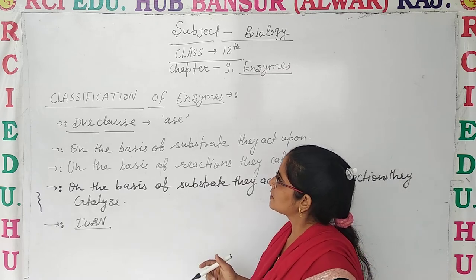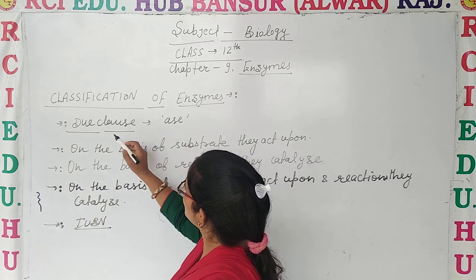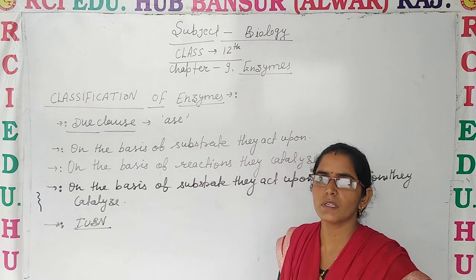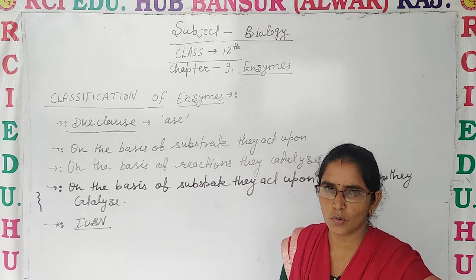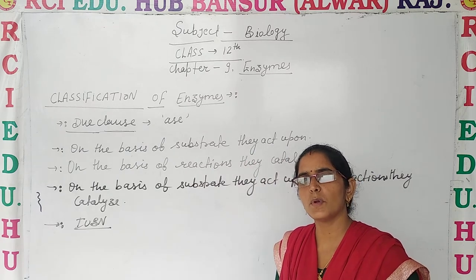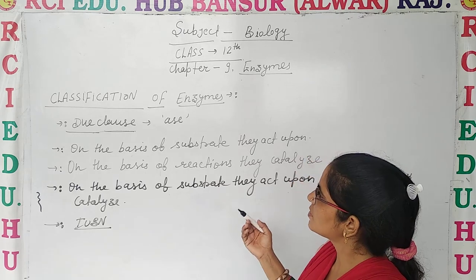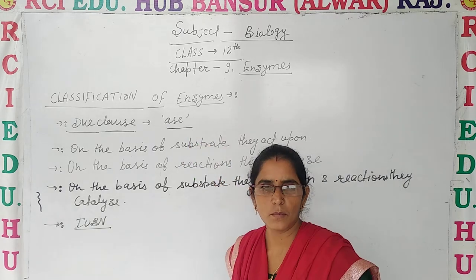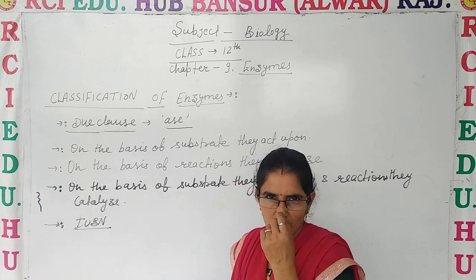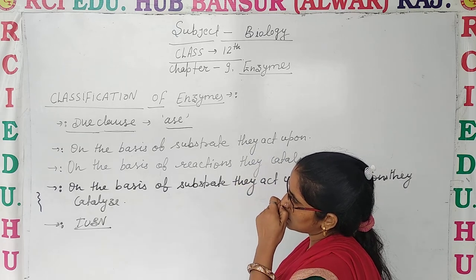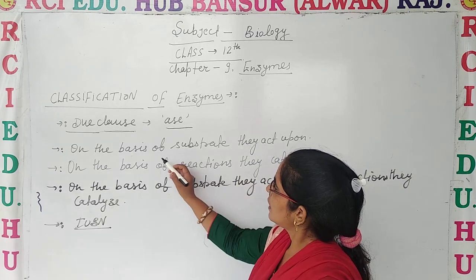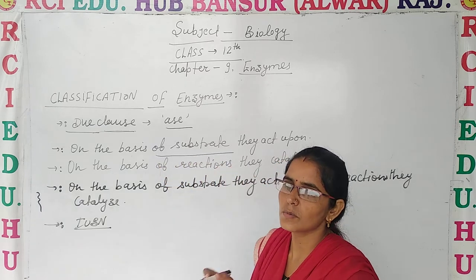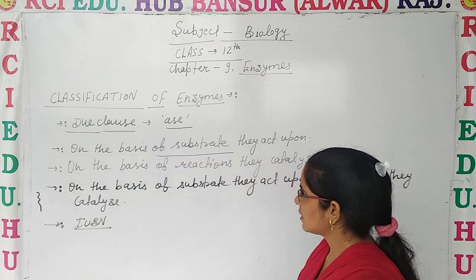The first point in classification was due to Duclose. Duclose said that when an enzyme acts on any substrate, we can give the enzyme a proper name based on that substrate. So we name the enzyme on the basis of which substrate it will act on.